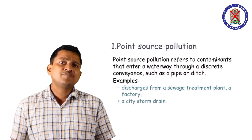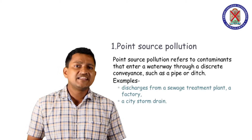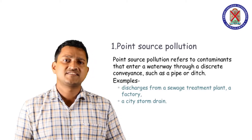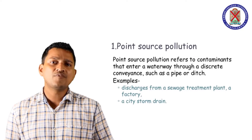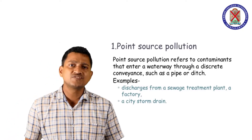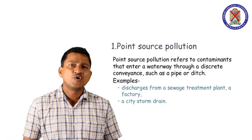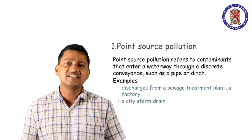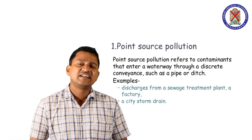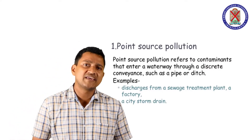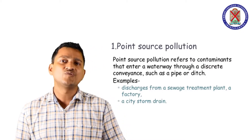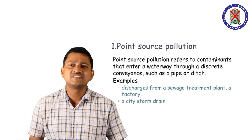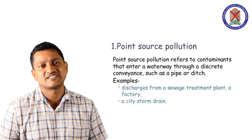Point source of pollution refers to contaminants that enter a waterway through a discrete conveyance such as a pipe or ditch. Non-point source pollution refers to diffuse contamination that does not originate from a single discrete source. That is the difference between point source and non-point sources.